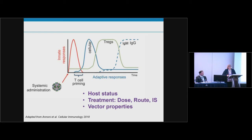Immune responses are complex and made of many different waves. You have innate immune responses with cytokines occurring very rapidly, then a wave of cellular effector T cell responses followed by regulatory T cells that dampen and control the immune response, and then the appearance of antibodies in different classes. I want to warn against the idea that with one snapshot in time you can understand what's going on — you really have to follow kinetics, particularly for regulatory versus effector T cells.